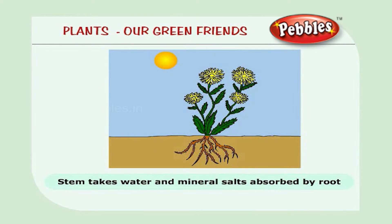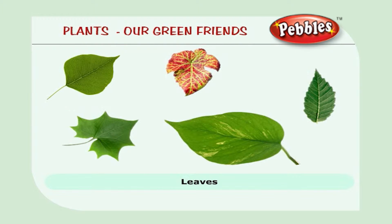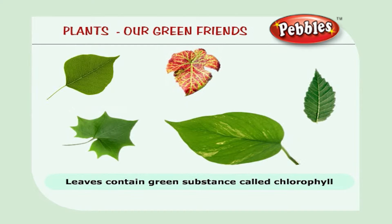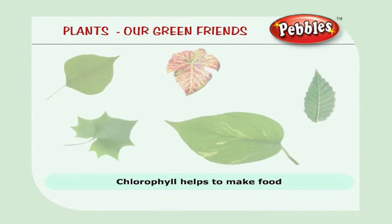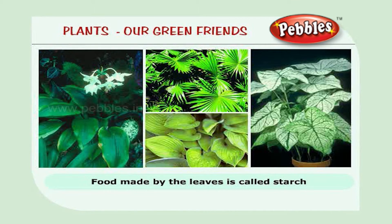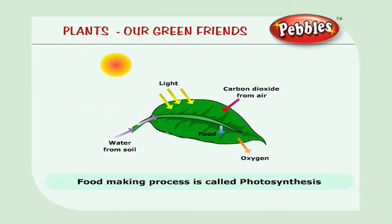The stem takes the water and mineral salts absorbed by the roots to the different parts of the plant, just like how we drink with a straw. Leaves are a very important part of a plant. They contain a green substance called chlorophyll. Chlorophyll helps to make food for the plant. The food made by the leaf is called starch.